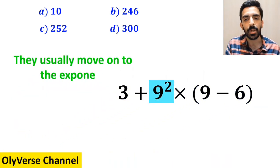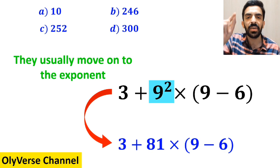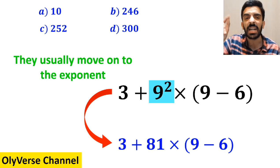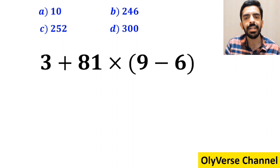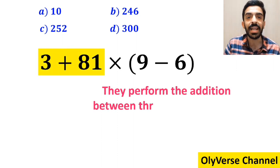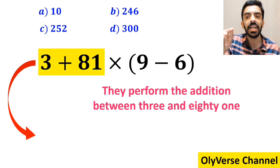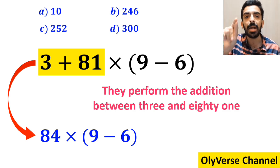Next, they usually move on to the exponent and replace this expression with 3 + 81 × (9 - 6). Then they perform the addition between 3 and 81, simplifying this expression to 84 × (9 - 6).